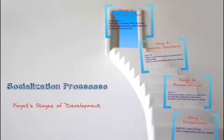Piaget was a Swiss developmental psychologist who was alive until 1980. He came up with this four-stage process of how we develop into functioning, well-rounded members of society. So let's take a look at each one of these.